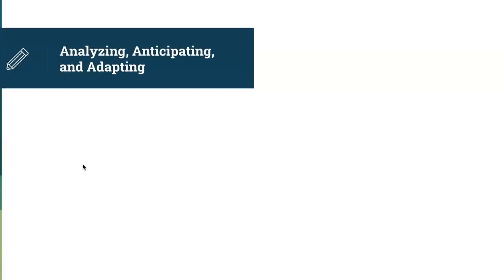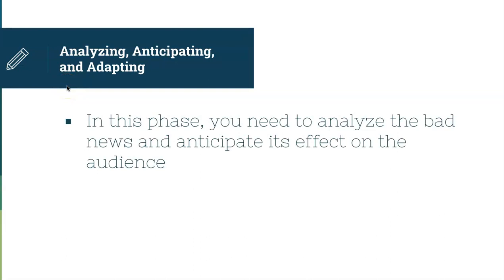Breaking that down further within the context of negative news: in the first phase of analyzing, anticipating, and adapting, you need to analyze the bad news and anticipate its effect on the audience — what exactly is the bad news, what are the details, and how is it going to affect the receiver. You may have a personal relationship with the person and know they appreciate bluntness, so you can come right out and say the bad news. Or you might need to be more careful depending on how your audience is going to read the message.